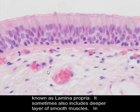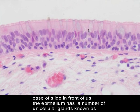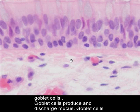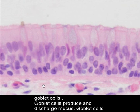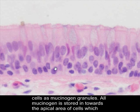Mucosa also sometimes includes a deeper layer of smooth muscles. In the case of the slide in front of us, the epithelium also has a number of unicellular glands known as goblet cells. Goblet cells produce and discharge mucus, and are easily recognized by their wine glass shapes. Mucus is made and stored within goblet cells as mucinogen granules.